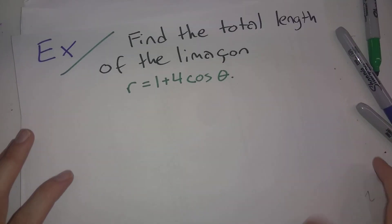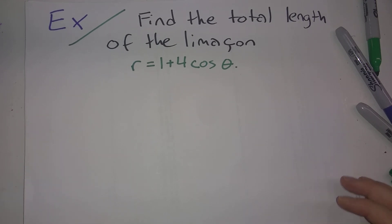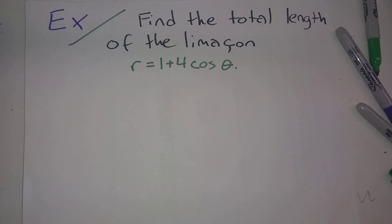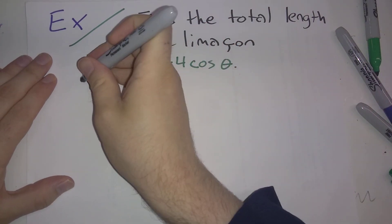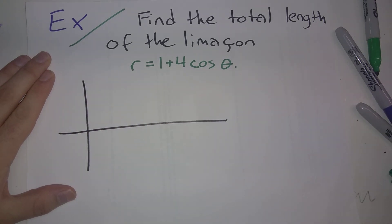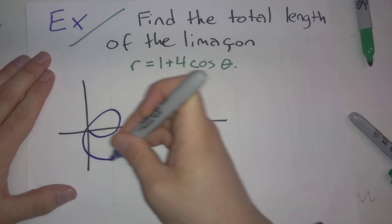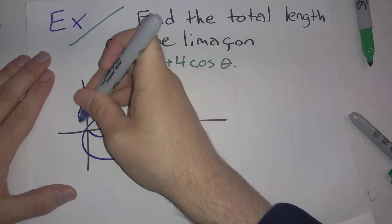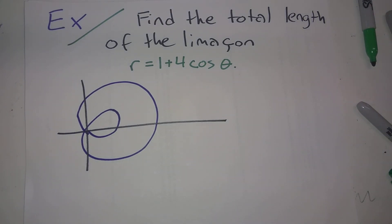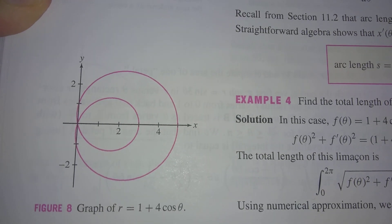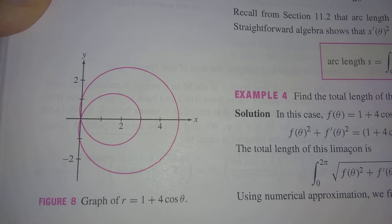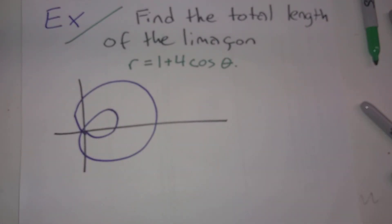Let's do an example using this. Find the total length of the limaçon r = 1 + 4cos θ. Let me draw a picture of this. There's an inside loop and an outside loop — I'll show the textbook picture here, which is the better drawing, but this is what's going on.